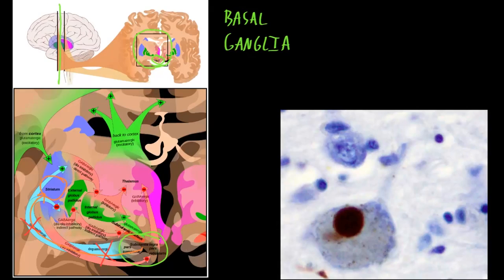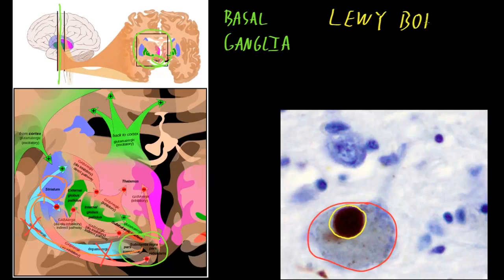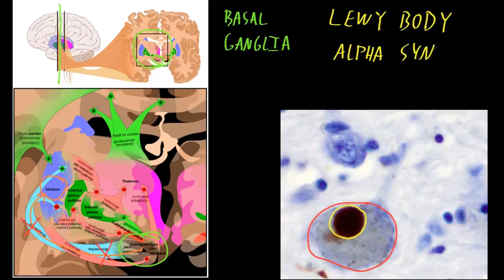When we look under the microscope, we can see diseased neurons that are degenerating in the substantia nigra, and they often contain abnormal structures called Lewy bodies. These abnormal structures are visible inside the degenerating dopaminergic neurons of the substantia nigra in Parkinson's disease. Lewy bodies primarily contain a protein called alpha-synuclein — a normal protein present in brain cells under normal conditions — but in Parkinson's disease, the alpha-synuclein is not cleared normally from the neurons and clumps together inside them to form Lewy bodies.